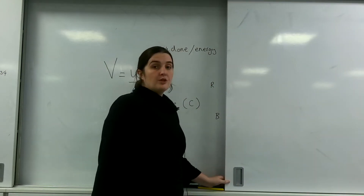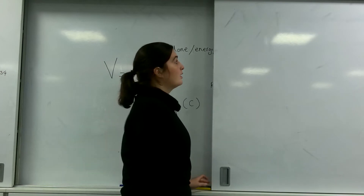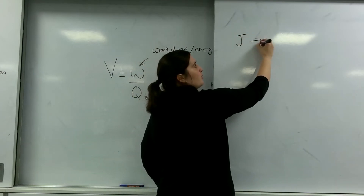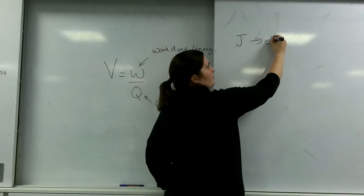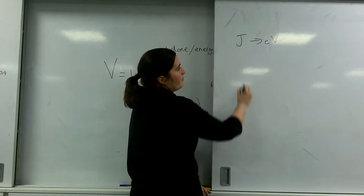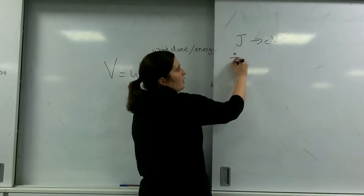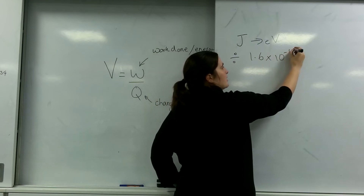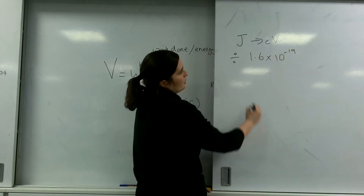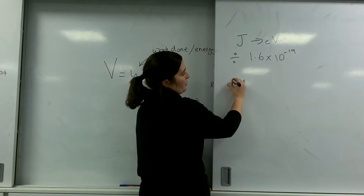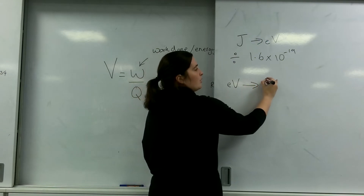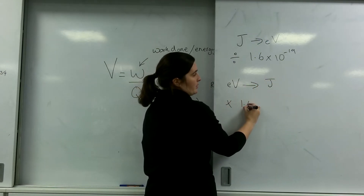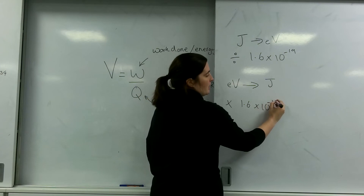It's important you know how to go between the two units. To go from joules to electron volts, divide by 1.6 times 10 to the minus 19. To go from electron volts to joules, multiply by 1.6 times 10 to the minus 19.